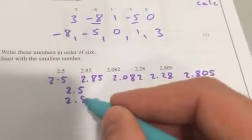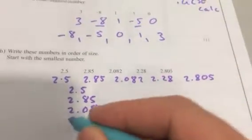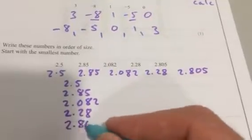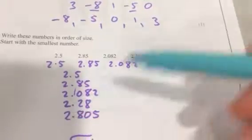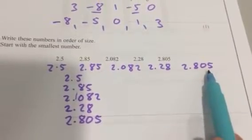2.5, 2.85, 2.082, 2.28, 2.805. And I've put them vertical so that the decimal point is in line, so that I don't confuse this longer number and assume that it's bigger than all the others.